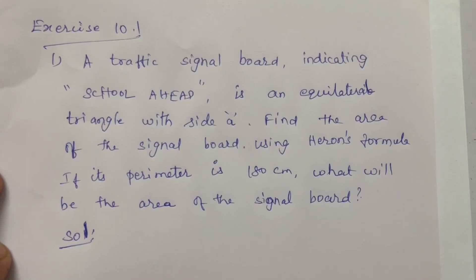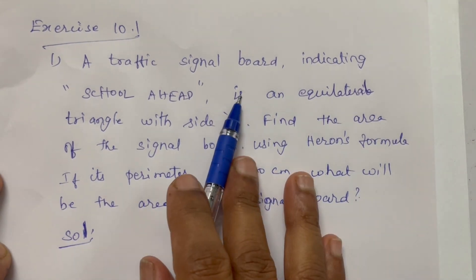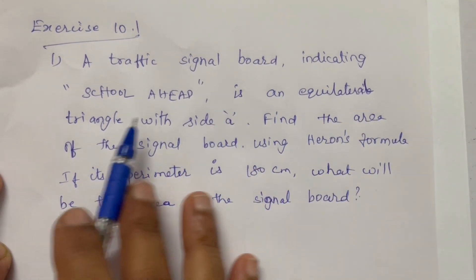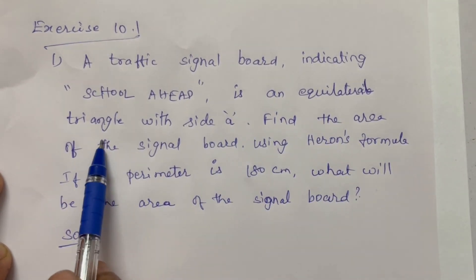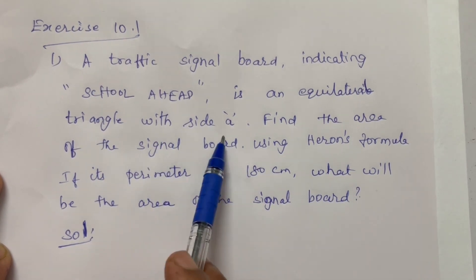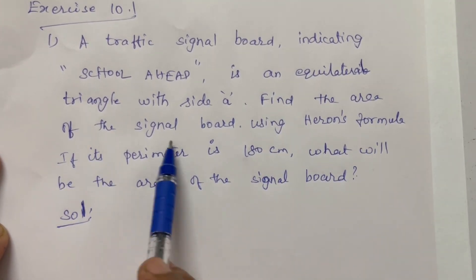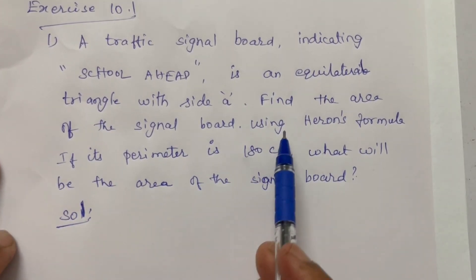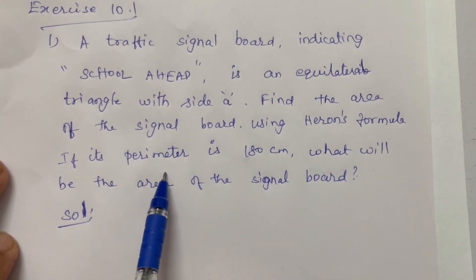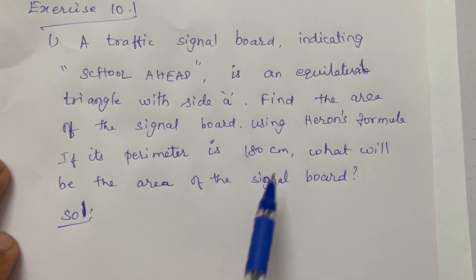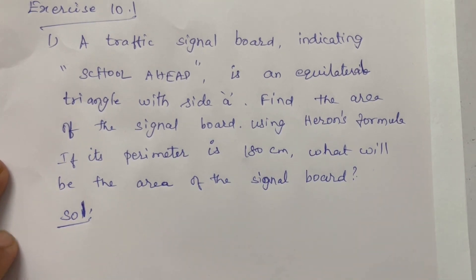Exercise 10.1: A traffic signal board indicating 'school ahead' is an equilateral triangle with side A. Find the area of the signal board using Heron's formula. If its perimeter is 180 cm, what will be the area of the signal board?